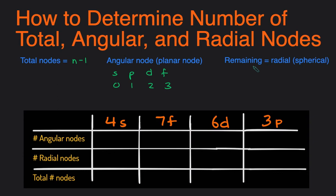And then the remaining number of nodes will be the number of radial, also called spherical nodes. Now let's take a look at a couple examples together.